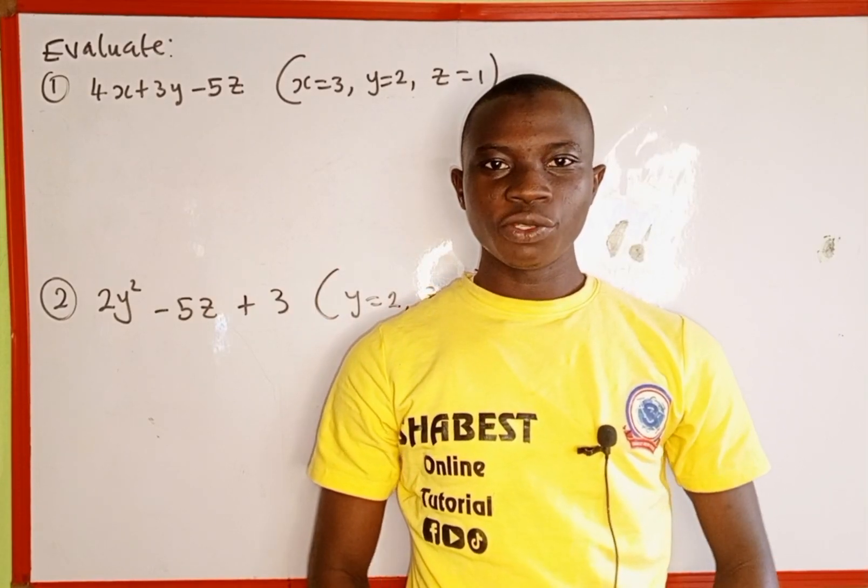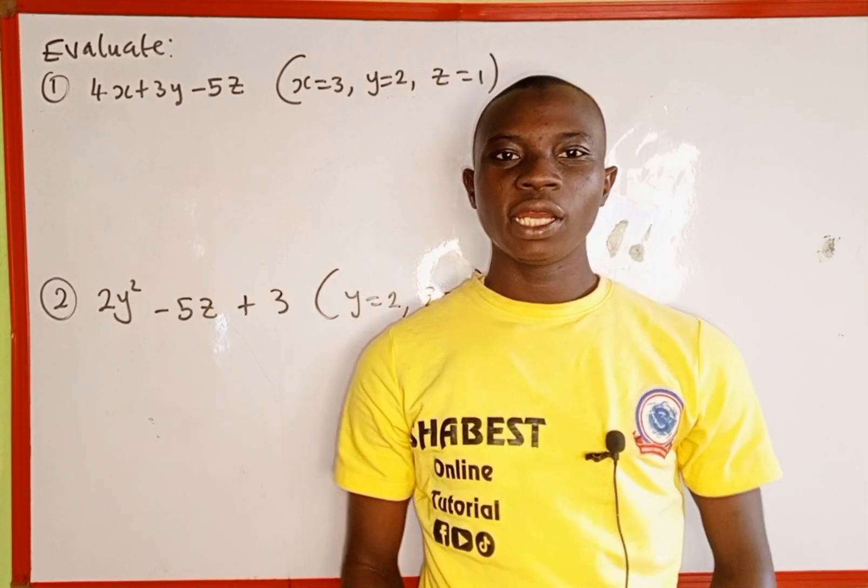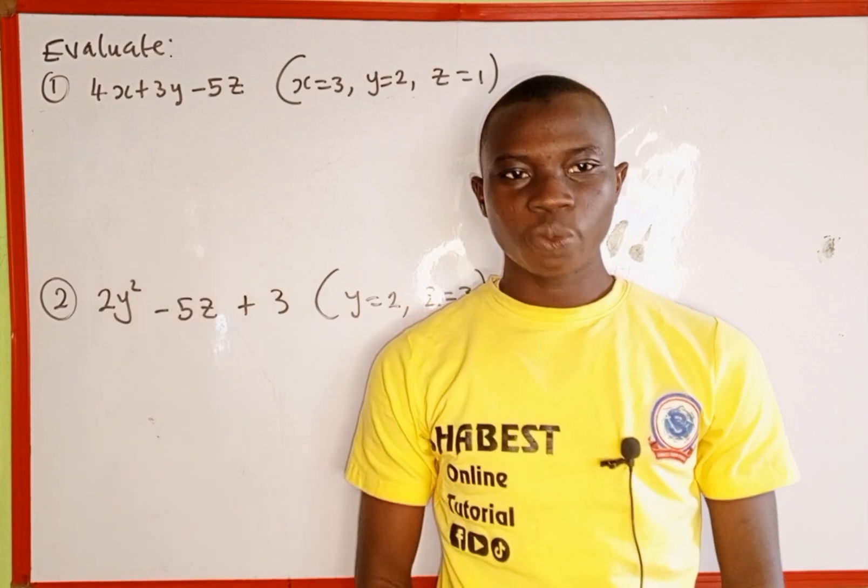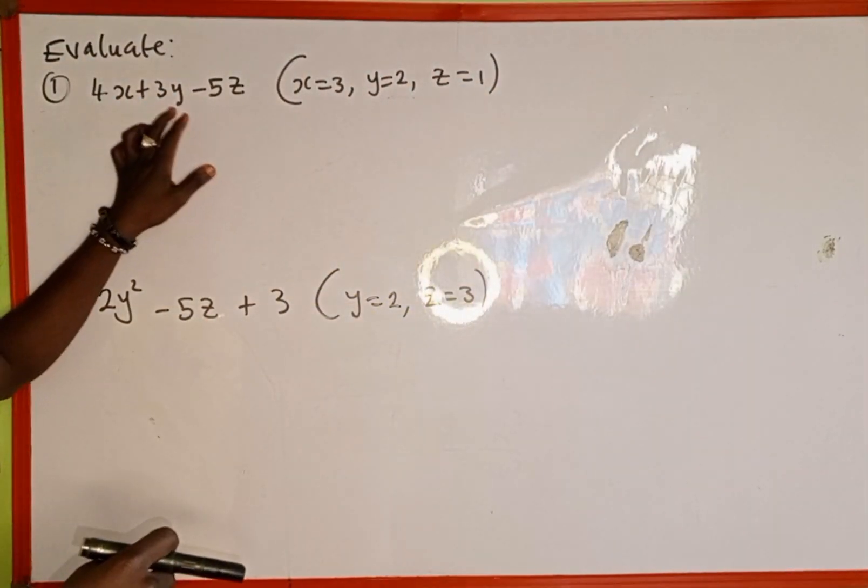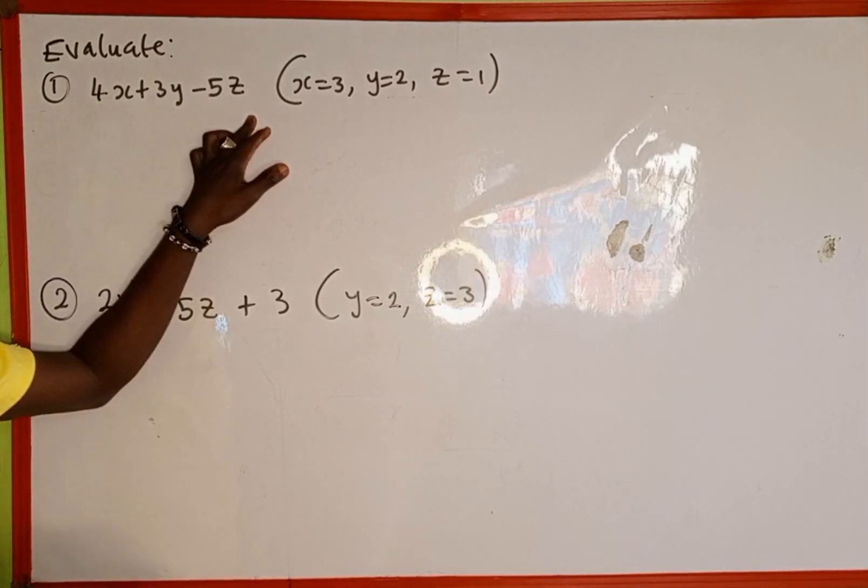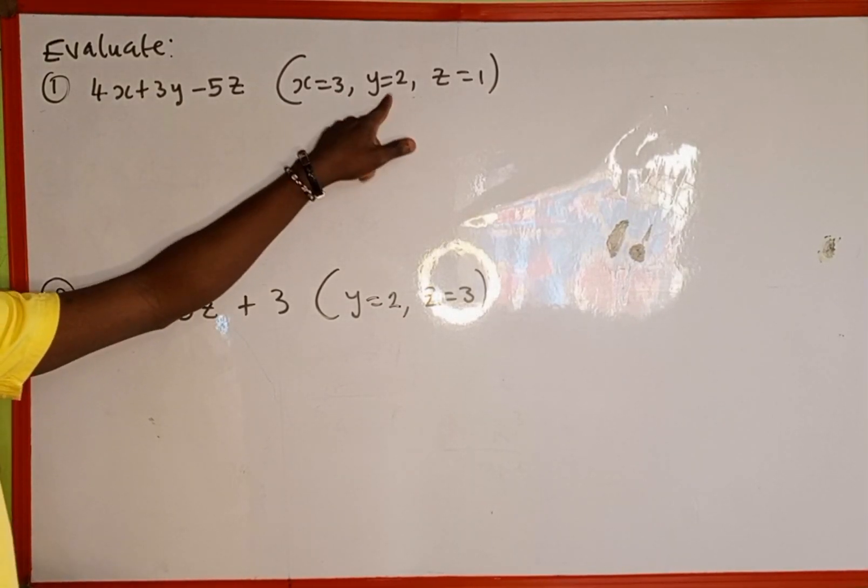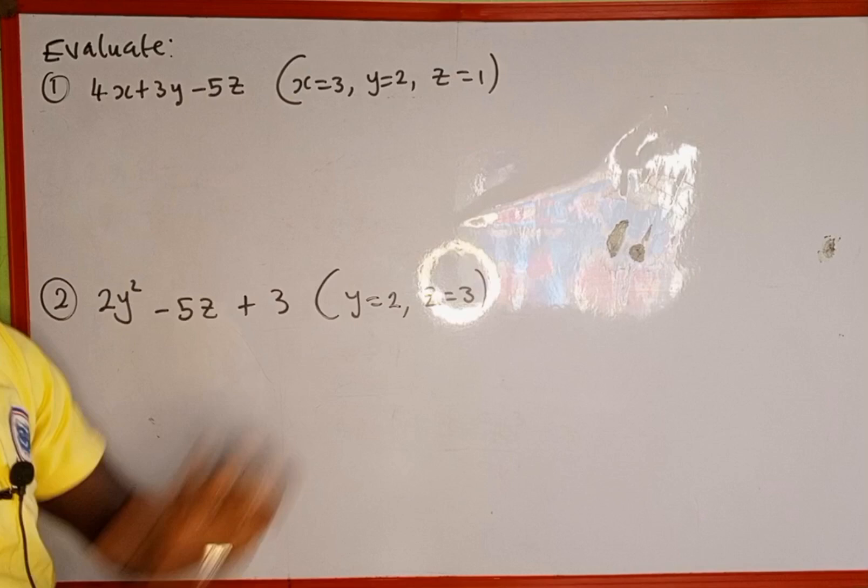Hello everyone, you are welcome back to Shabbat's Online Tutorial. In today's tutorial, we're going to learn how to evaluate this algebraic expression. The given expression is 4x + 3y - 5z where x = 3, y = 2, and z = 1.